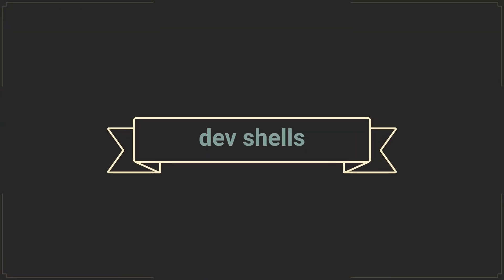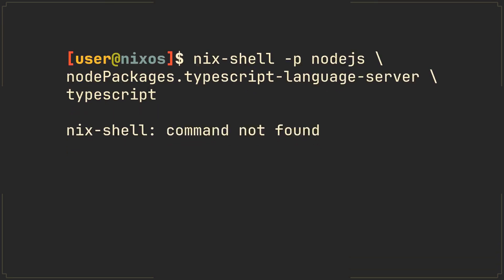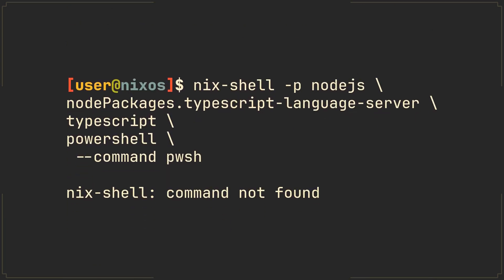Tip number 2. Many NixOS users are also software engineers, and that is because of the amazing Nix shells. They allow you to create shells with specific packages, separating your user environment from the development one. To set up such a shell, simply use the nix shell command with the -p flag and your packages listed after that. You can even append it with a -- command flag to run commands upon entering the shell, which is very useful for those who don't like bash.